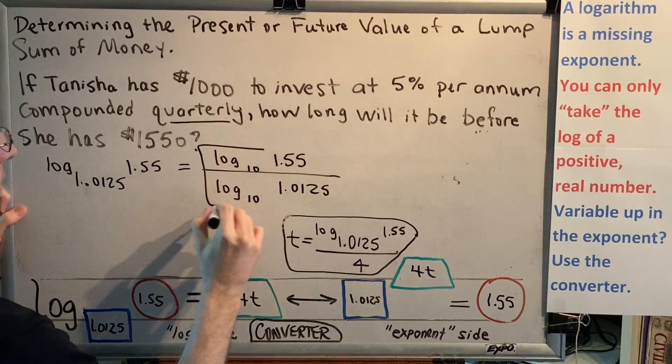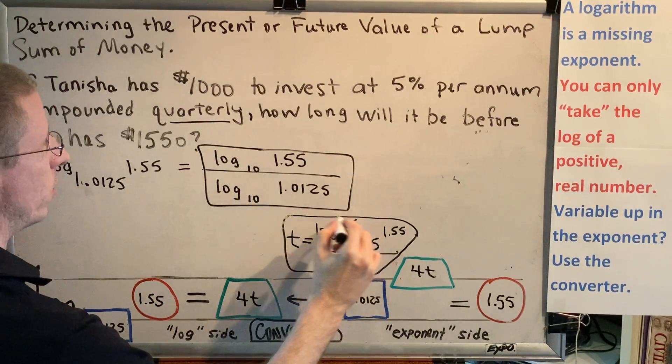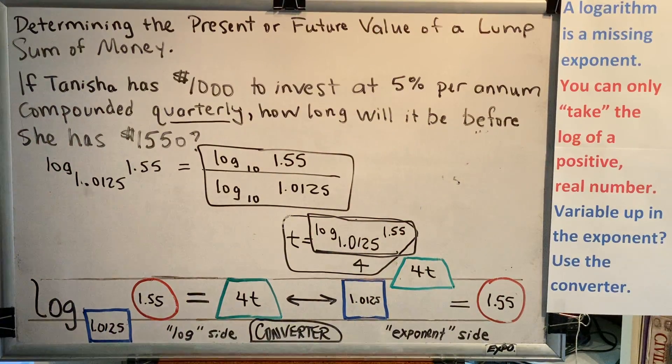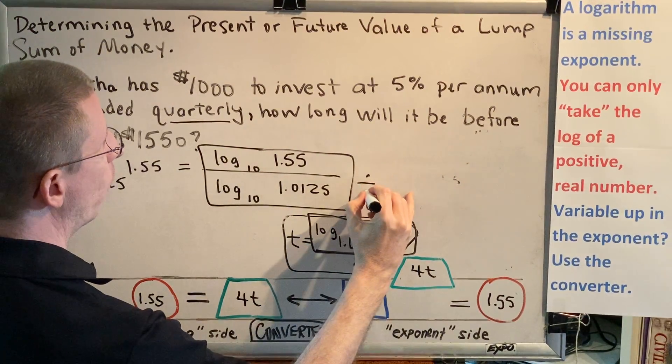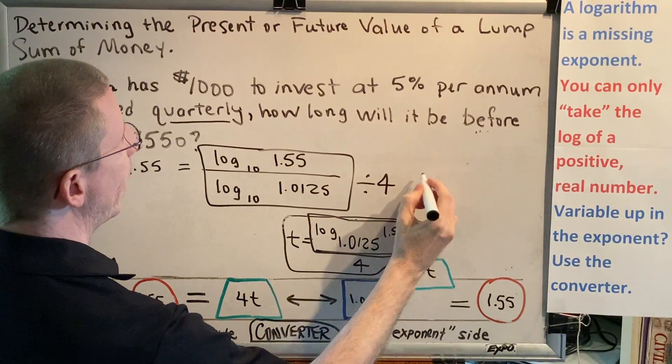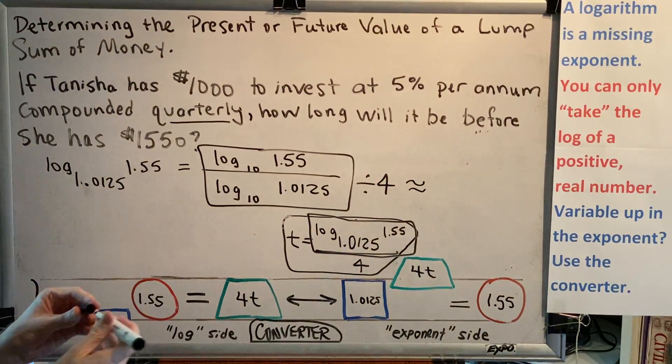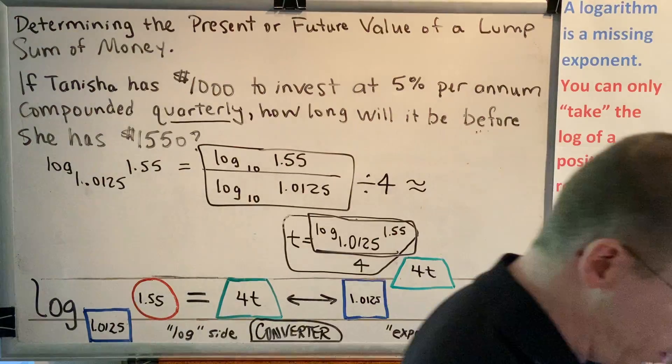This right here is equivalent to the numerator part of our answer. So if we can calculate what this is equal to and then divide it by 4, we will get a decimal answer, something that is relatable in a real world sense.